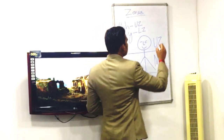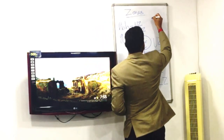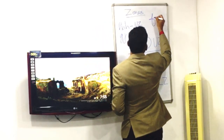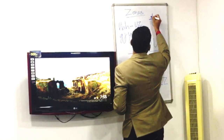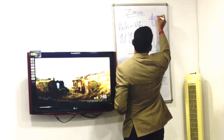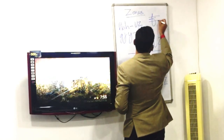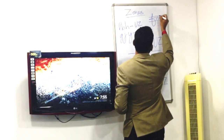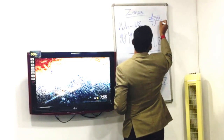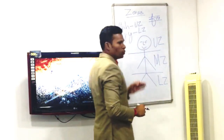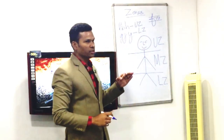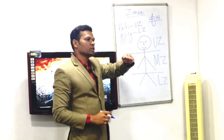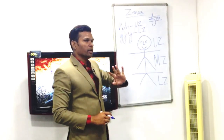F is the only letter in graphology which has all three zones — this is the upper zone, this is the middle zone, and this is the lower zone. F is the only letter which has all three zones in handwriting.